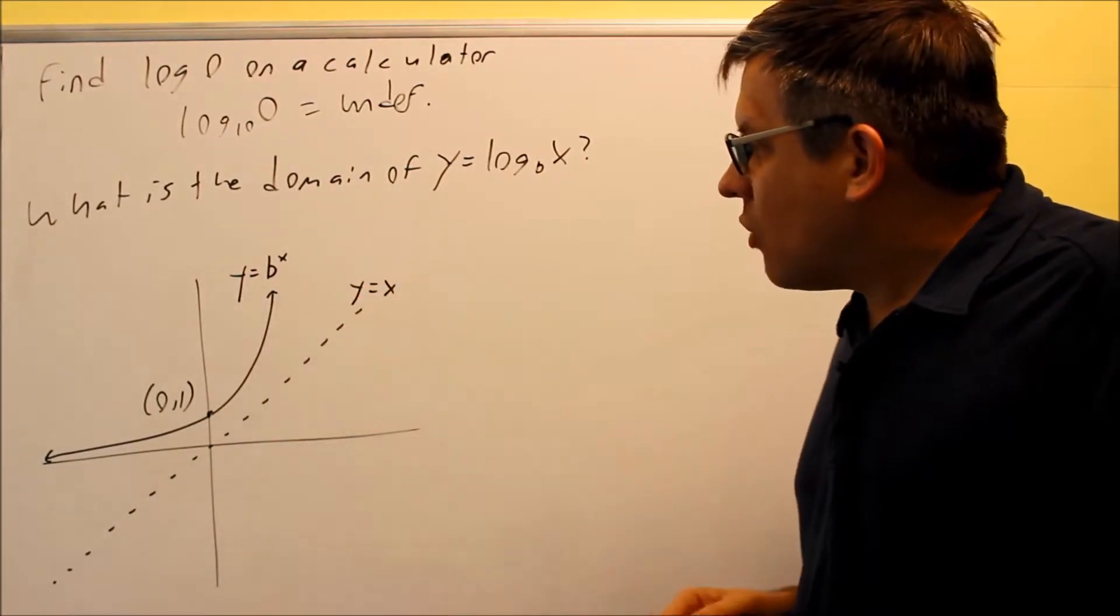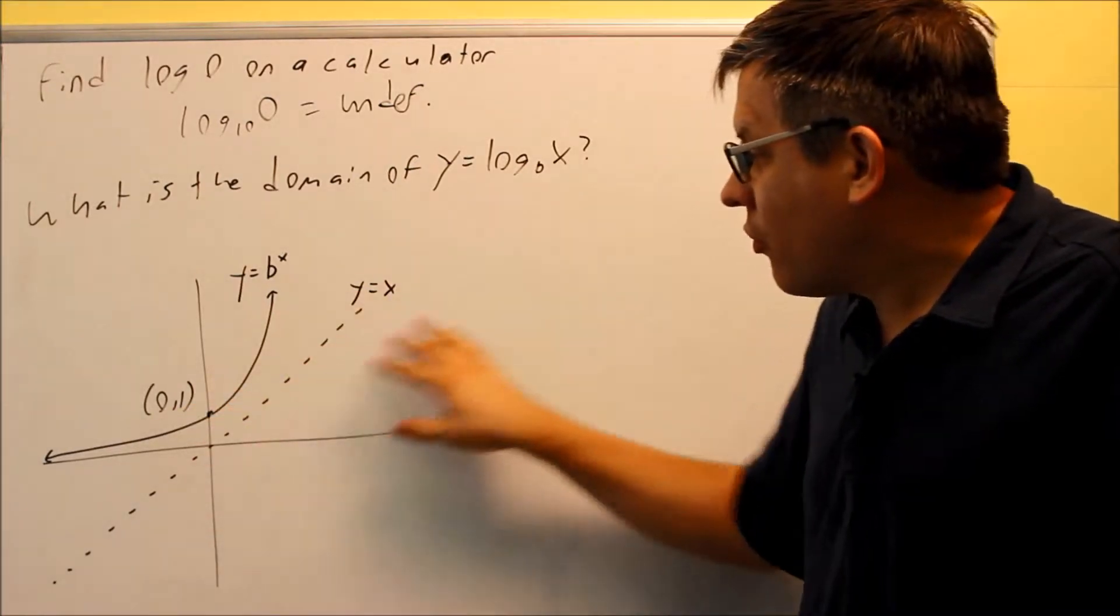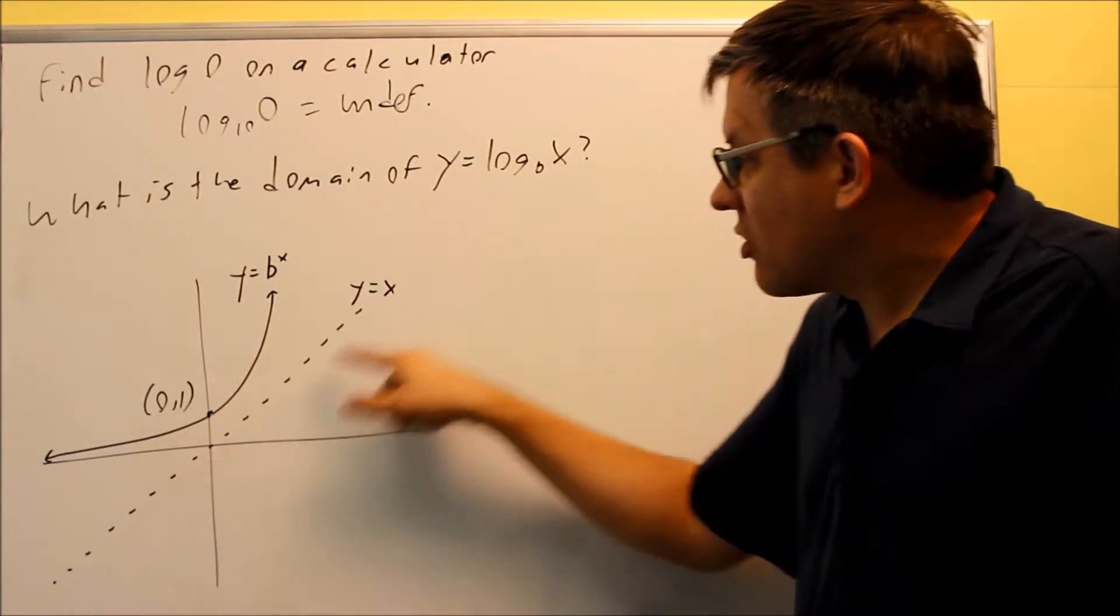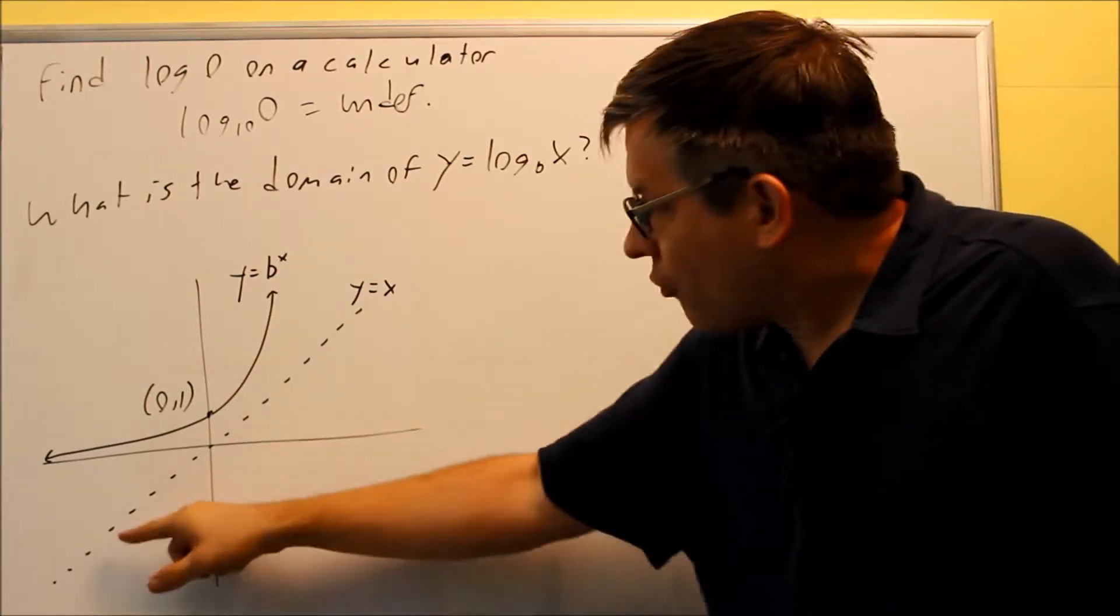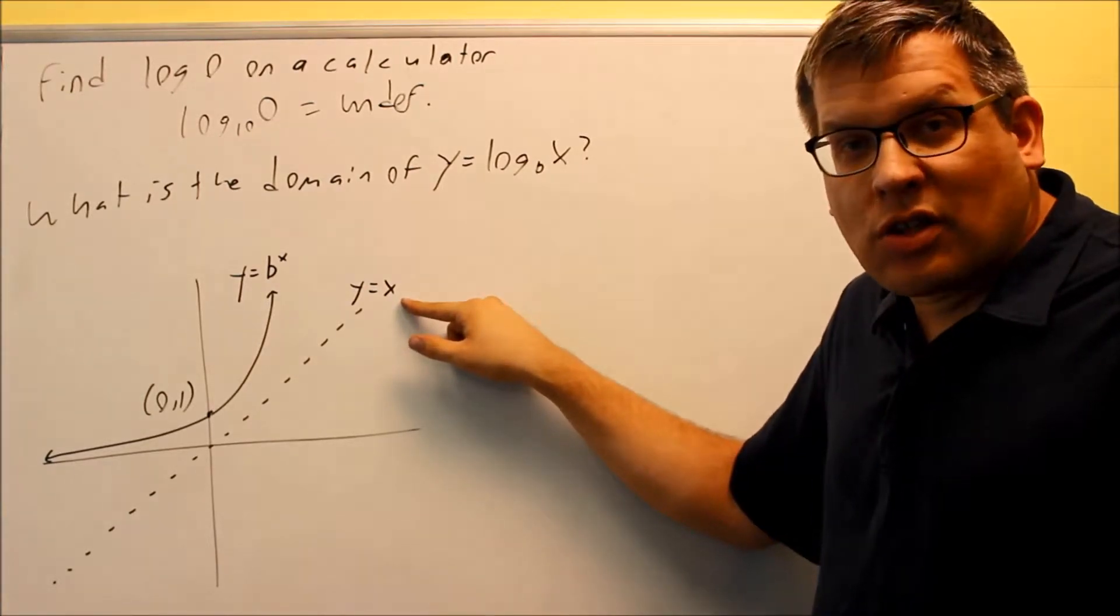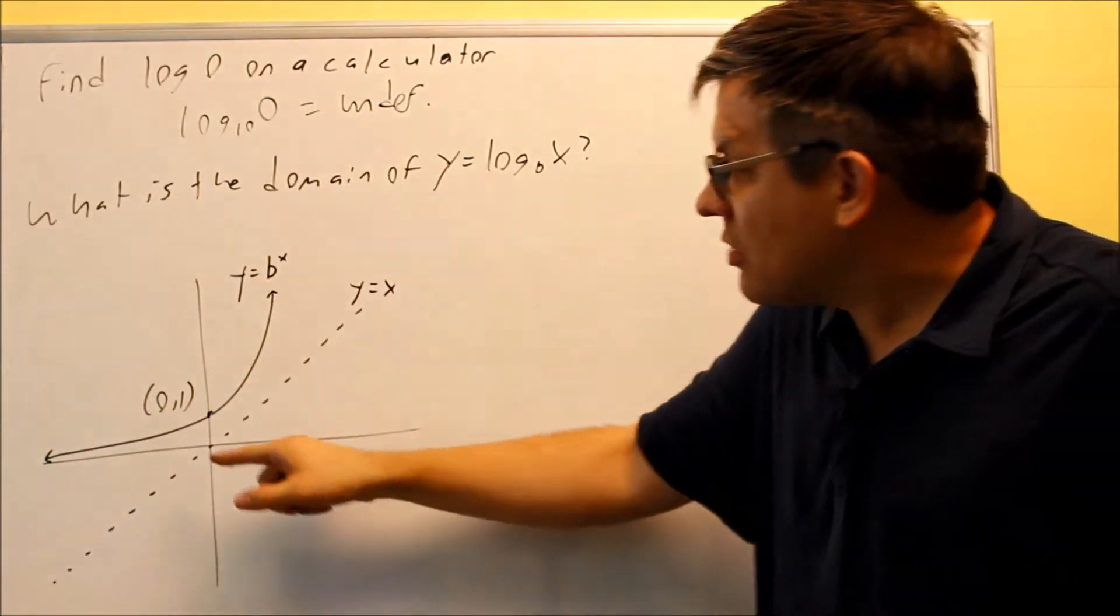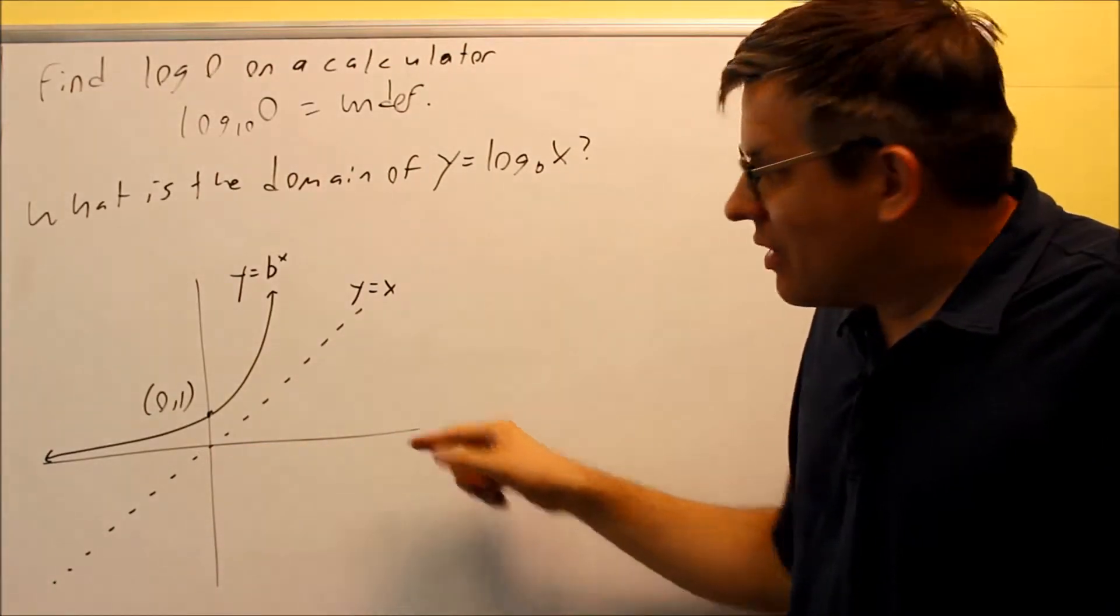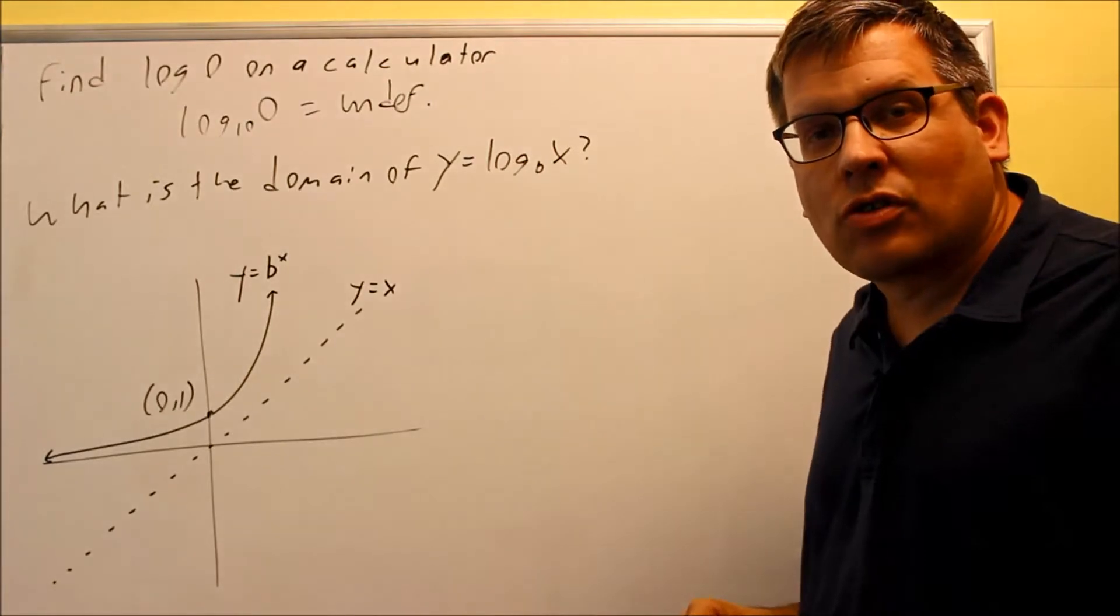So because of that, we want to draw the inverse of that graph right here. Now I've already drawn this line here, the line y equals x. All inverses are going to be reflective about the line y equals x. That's a symmetry line, so you can take one part and fold it over on top. So it means that the graph of log is going to be, if I take this graph and flip it over this way, that's what the new graph is going to look like.